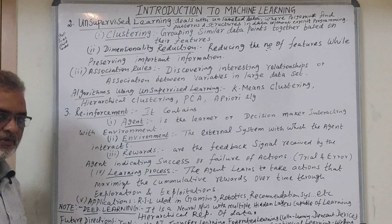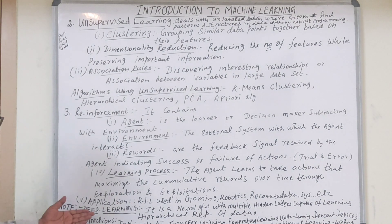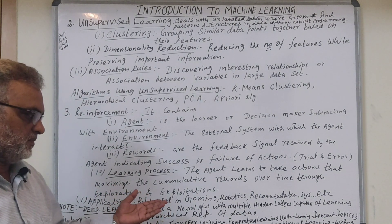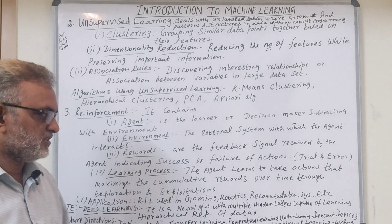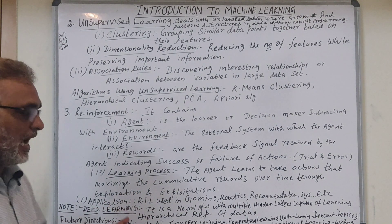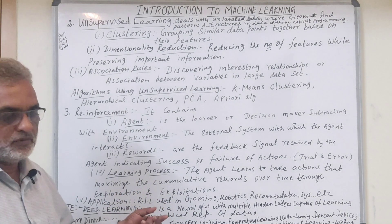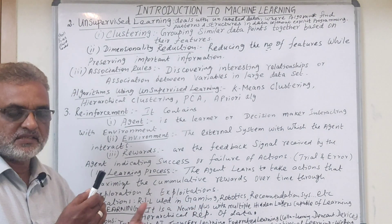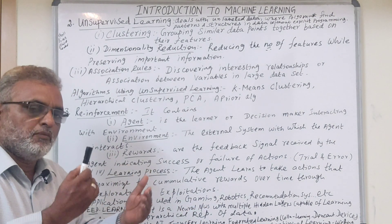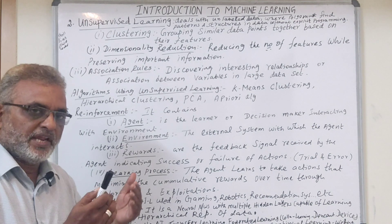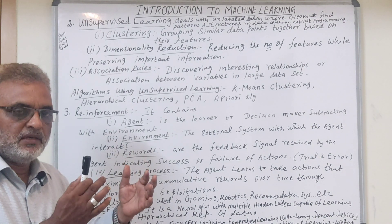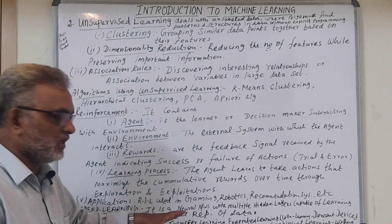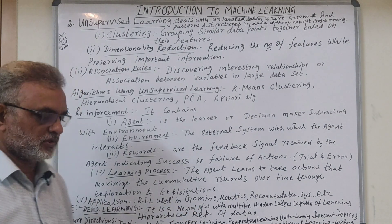An advancement in machine learning is deep learning — neural networks with multiple hidden layers capable of learning hierarchical representations of data. Neural networks simulate the model of the human brain, based on how the human brain works. That is what is called neural networks.